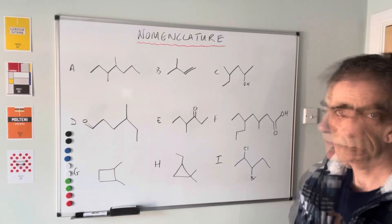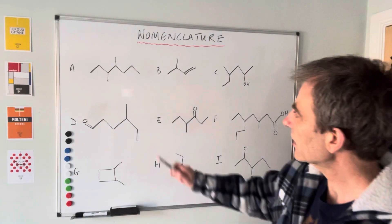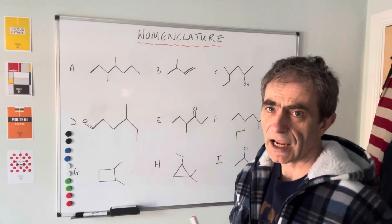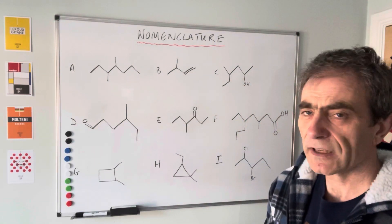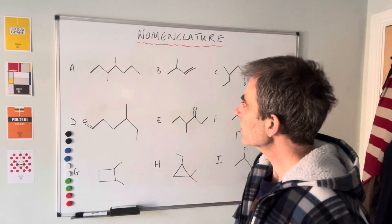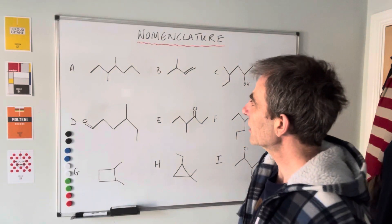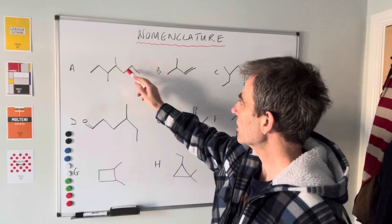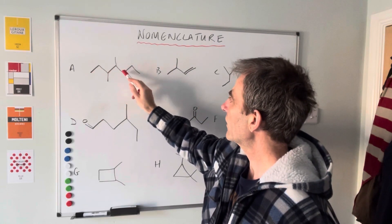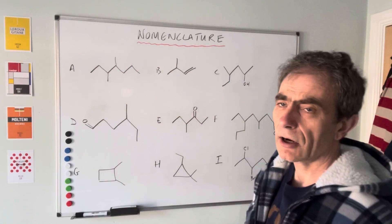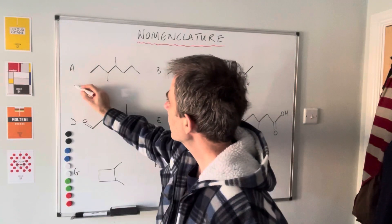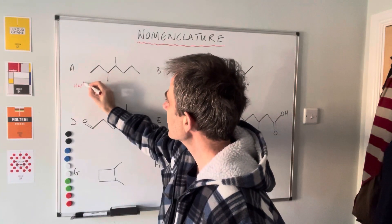The first one is an alkane, so it's going to end in -ane; its suffix is -ane. We're looking for the longest continuous carbon chain, and it's the one straight down the middle. We've got one, two, three, four, five, six, seven carbons in that chain, so this is going to have 'hept' in the name.